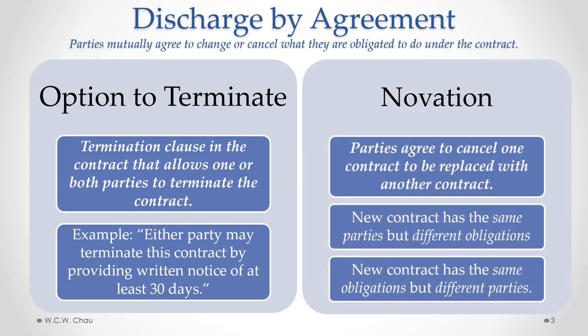Another way to discharge by agreement is called novation. This is where the parties have agreed to cancel one contract and replace it with another contract. Novation can happen in one of two ways: one way is a brand new contract with the same parties but different obligations; another type of novation is a new contract with the exact same obligations but with different parties, or at least one of the parties can be different.